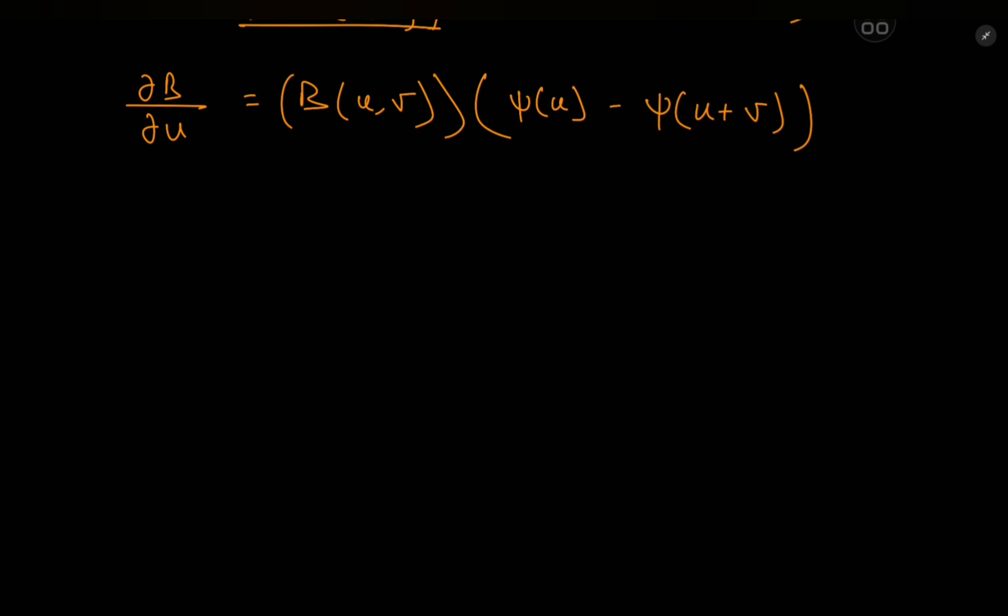And I forgot exactly what we were doing. Yeah, of course, we had to plug in the required values of u and v. So, that's a quarter. So, this implies that the partial derivative of the beta function with respect to u at these values, the required values, equals the beta function at one quarter and one quarter times the digamma function at a quarter minus the digamma function at one half.